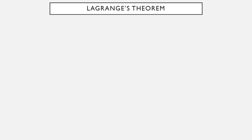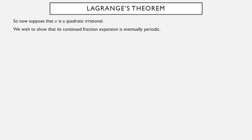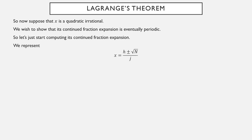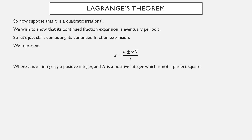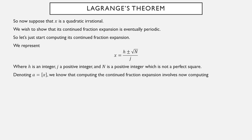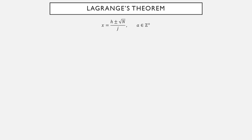Lagrange's theorem goes the other way. We assume that x is a quadratic irrational and want to show its continued fraction expansion is eventually periodic. Let's try the most straightforward approach: start with a quadratic irrational and start computing its continued fraction. We represent x as (h + √n) / j, where h is an integer, j is a positive integer, and n is a positive integer that is not a perfect square. We let a be the integer part.